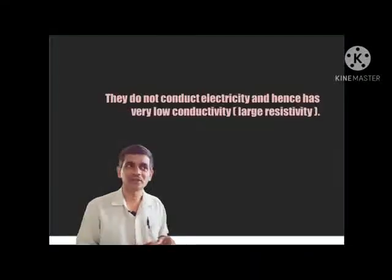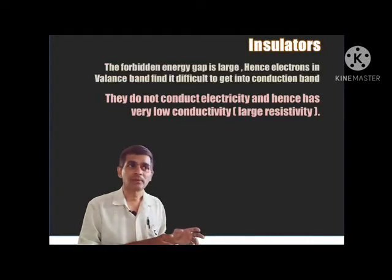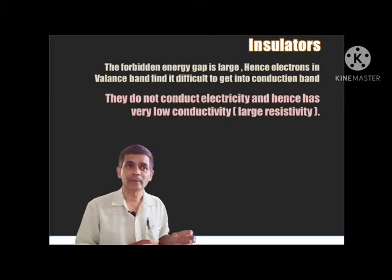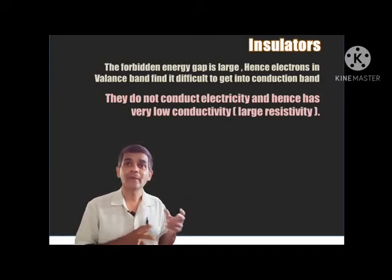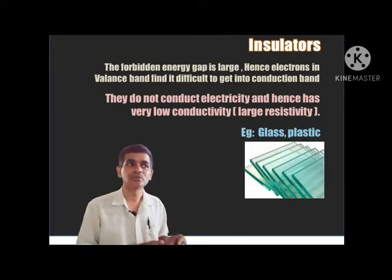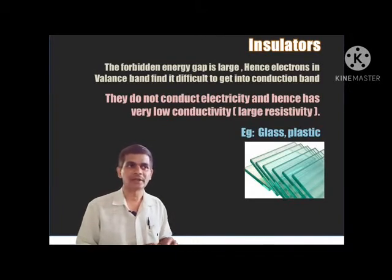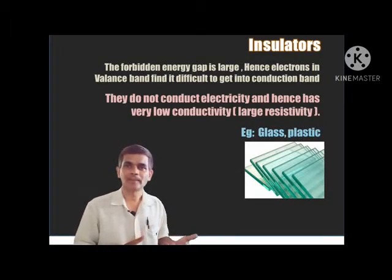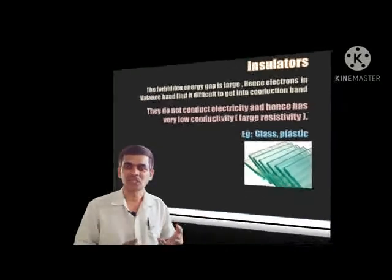In case of insulators, the forbidden energy gap is large. Hence, electrons in the valence band find it difficult to get into the conduction band. You cannot find any electrons in the conduction band — it is empty. Due to that reason, they do not conduct electricity and hence have low conductivity or high resistivity. Examples: glass, plastic, wood, etc.